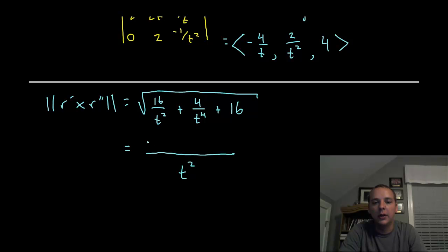And in the numerator you would get a big square root. If you made a common denominator of t to the 4th, you would get 16t to the 4th from getting that common denominator. This term would have a 16t squared and this term would have a plus 4.